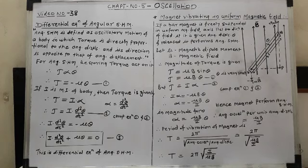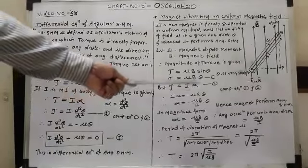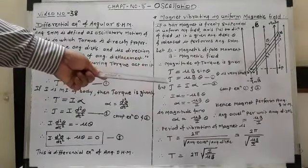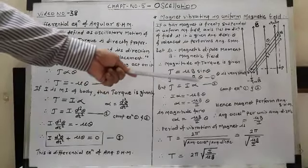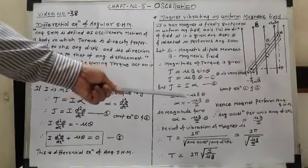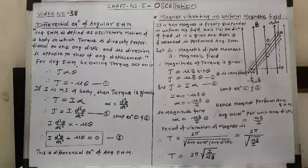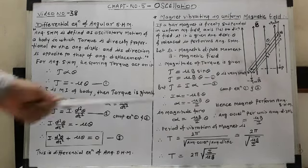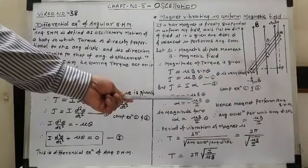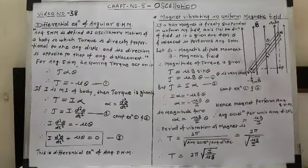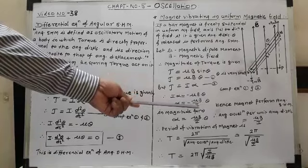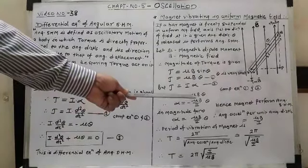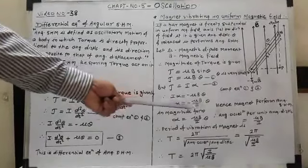We know that I is the moment of inertia and α is the angular acceleration, with the relation τ = Iα as equation 2. Comparing equation 1 (τ = μBθ) and equation 2 (τ = Iα), since the left-hand sides are the same, we get μBθ = Iα. We apply a negative sign because angular displacement and torque are opposing each other, so Iα = −μBθ. Therefore, the angular acceleration is α = −(μB/I)·θ.